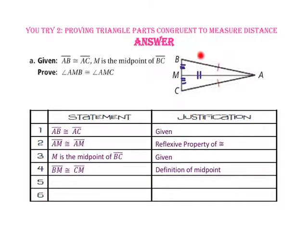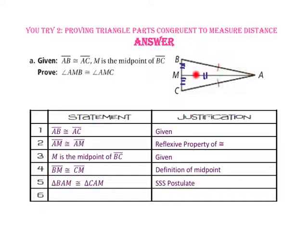...triangle BAM is congruent to triangle CAM by the side-side-side postulate. Since all corresponding parts of congruent triangles are congruent and angle AMB corresponds to angle AMC, we know that angle AMB is congruent to angle AMC by CPCTC.